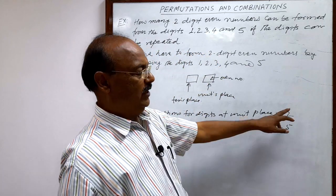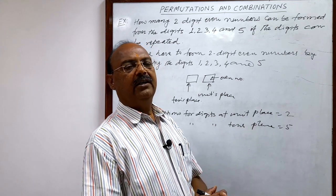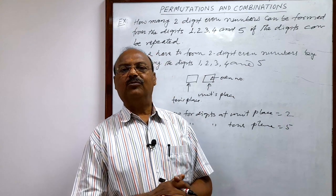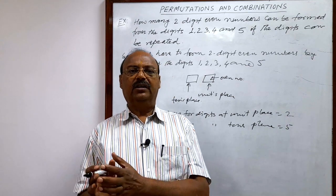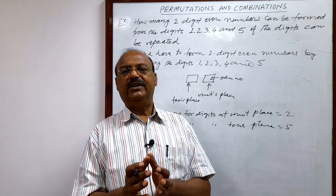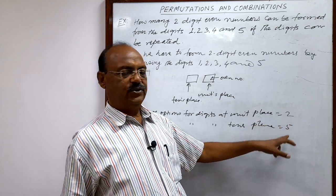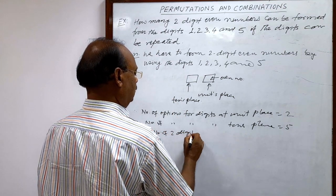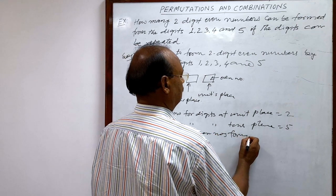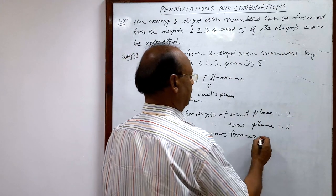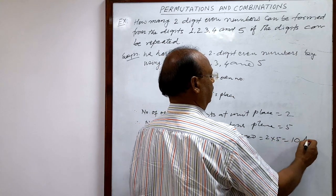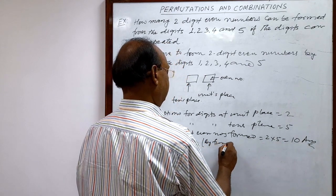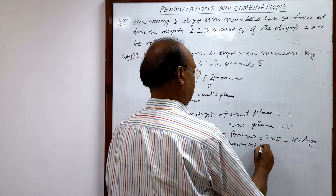Altogether, we multiply 2 and 5 by the fundamental principle of counting. The fundamental principle of counting states that if one part of a job can be done in m ways and another part in n ways, then the job altogether can be done in m × n ways. Therefore, the number of two-digit even numbers formed, where digits can be repeated, is 2 × 5 = 10. That is the answer.